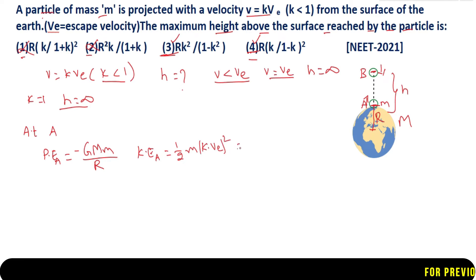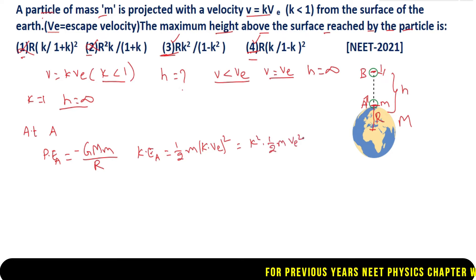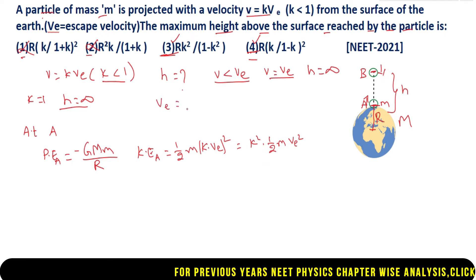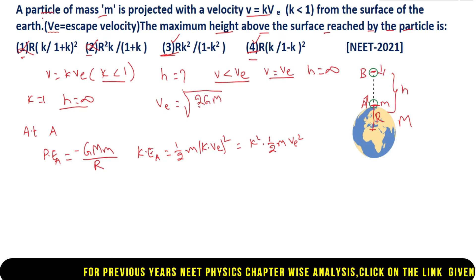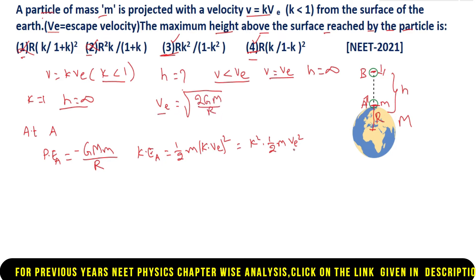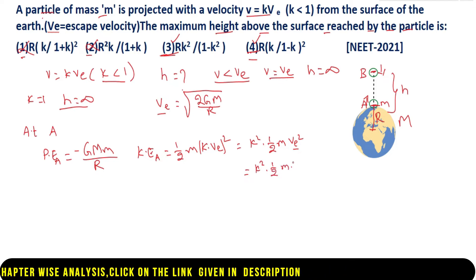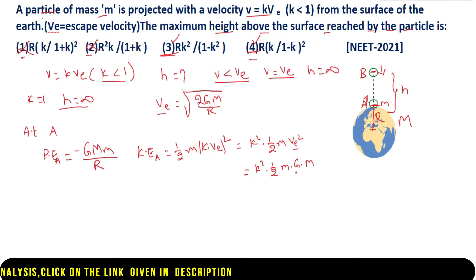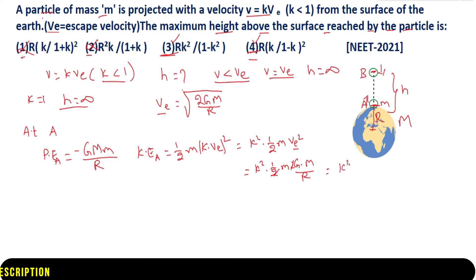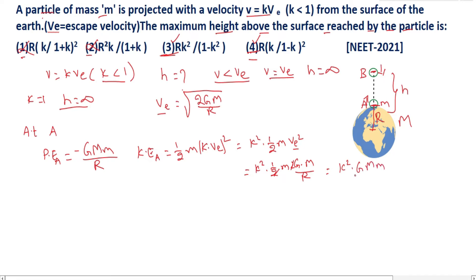That is equal to k squared into half m Ve squared. We know the formula for escape velocity as Ve equal to root over 2G capital M by capital R. Substituting Ve, this becomes k squared into G capital M small m by capital R — since the factor of 2 cancels. So this is the total kinetic energy at A. These are the values of potential energy and kinetic energy at A.